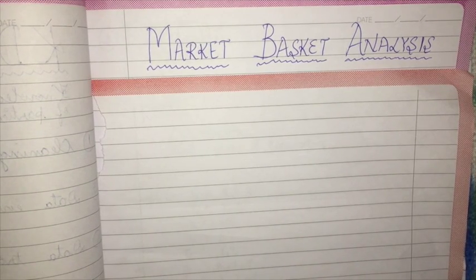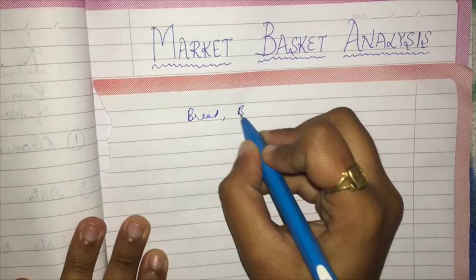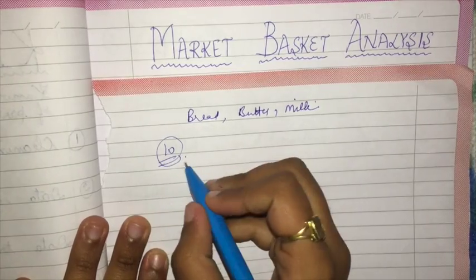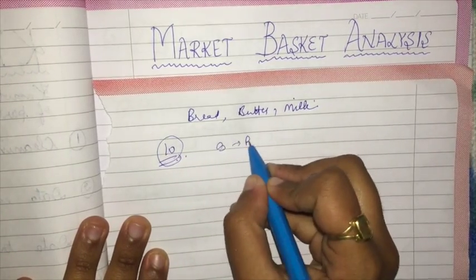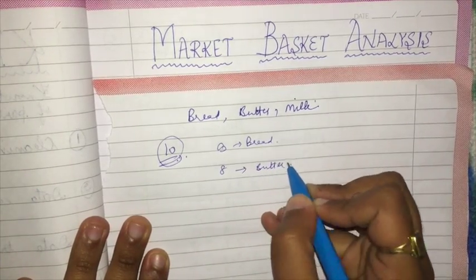How do they come to know this? They find out on the basis of previous transactions. Suppose ten customers visited the supermarket, and the shopkeeper realized that nine out of ten bought bread and milk and butter. For example, suppose we have three commodities: bread, butter, and milk, and we have ten transactions — ten people came, and out of these ten, nine bought bread and eight bought butter.